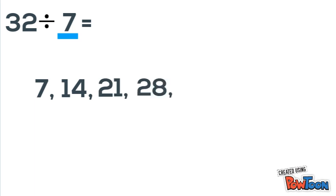Last, let's do 32 divided by 7. We're going to just count by 7s this time. So 7, 14, 21, 28. I know the next multiple of 7 is 35, but that's too much, so I'll stop there.